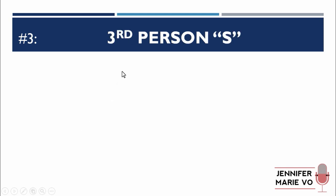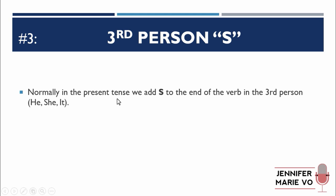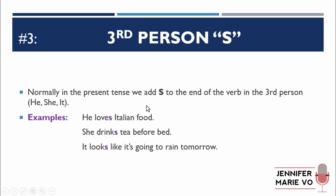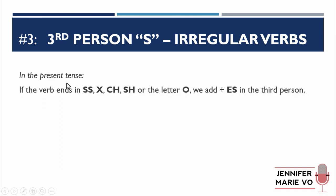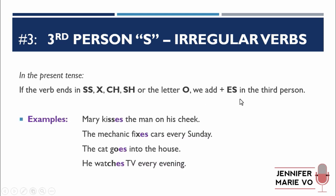The third common error is people forgetting about the third person singular S. In the present tense, we add S to the end of the verb in the third person — for he, she, or it. Examples: "He loves Italian food." "She drinks tea before bed." "It looks like it's going to rain tomorrow." Make sure to put the S — don't say "he love Italian food," it's "he loves." Also, if the verb ends in SS, X, CH, SH, or the letter O, we add ES in the third person. So "Mary kisses the man on his cheek" — it ends with double S, so we add ES. "The mechanic fixes cars every Sunday" — ends in X, so ES. "The cat goes into the house." "He watches TV every evening."